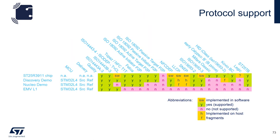Looking at protocol support of the 3911B, all of these protocols are supported with the exception of passive target. So the 3911 cannot act as a passive target — it does not do card emulation. There is also a difference between the discovery and the nucleo boards in terms of which standards each board supports. For EMV, this is a very specialized case and only supports a very small subset of the standards.